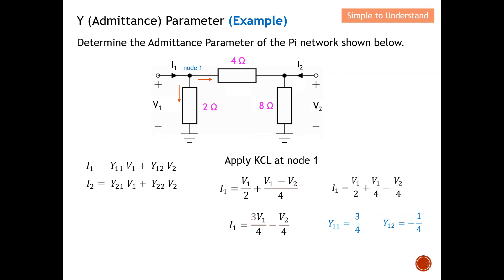After finding all the Z parameters, you can simply take the inverse to obtain the Y or admittance parameters. However, for this example I adopt a different approach, so you have an alternative method that can also be used to cross-check answers for either Z or Y parameters.